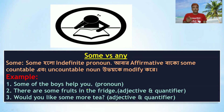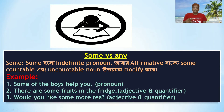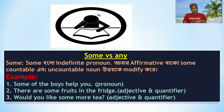Example: 'There are some fruits in the fridge.' Here 'some' modifies the countable noun 'fruits,' so it acts as a quantifier adjective. When 'some' has to modify or quantify a noun, it becomes an indefinite adjective.